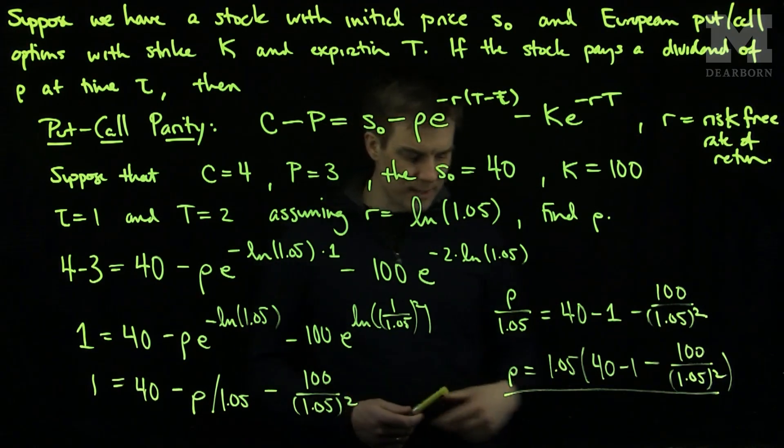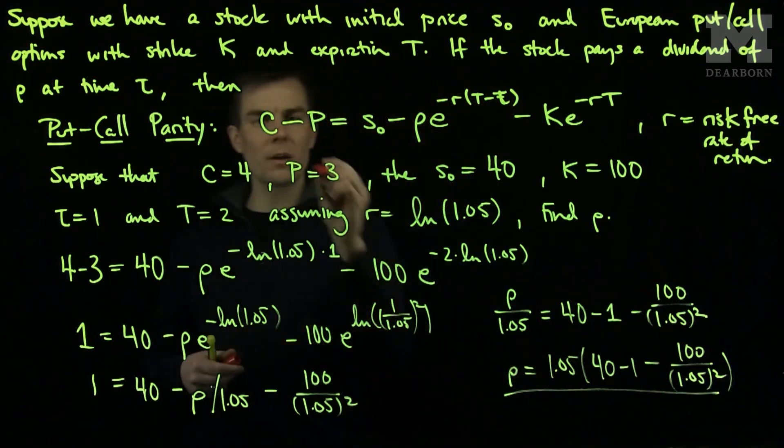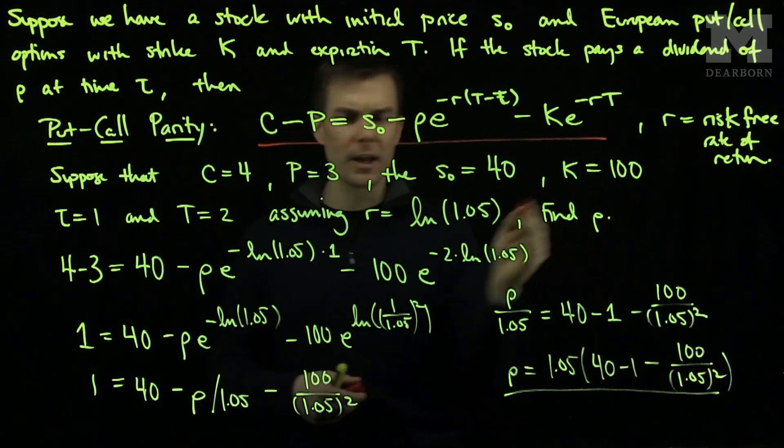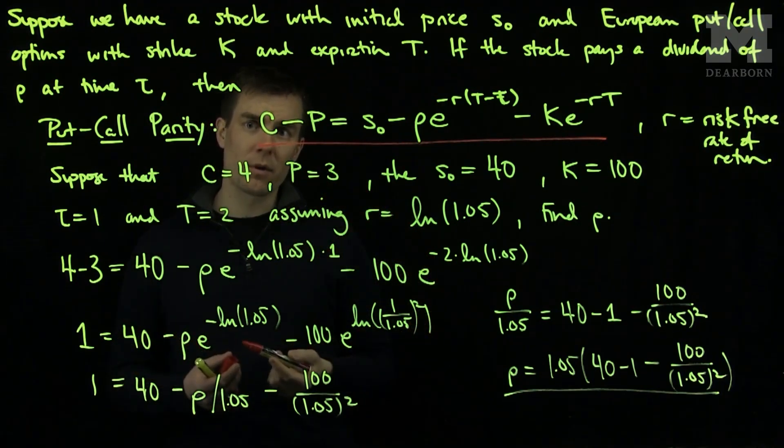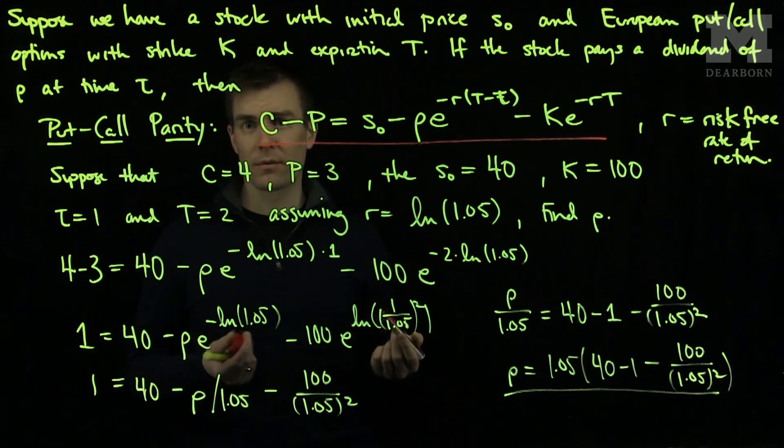So it's important to realize that once we have the formula by put-call parity, once we know particular parameters in the problem, we just simply substitute them into the put-call parity formula and we're able to find the remaining parameter for free.